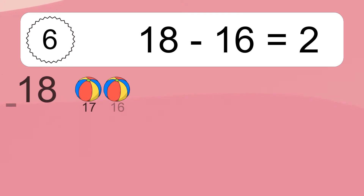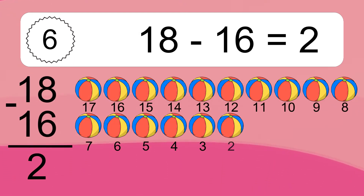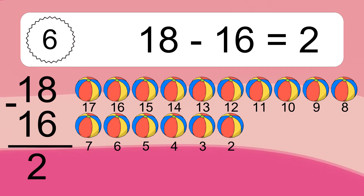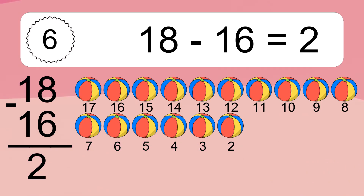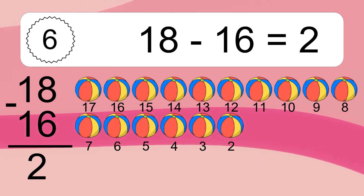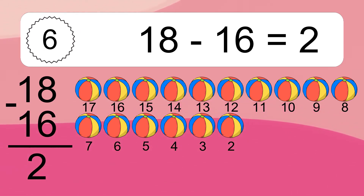18 minus 16 equals what? 18 minus 16 equals 2. Let's count it: 17, 16, 15, 14, 13, 12, 11, 10, 9, 8, 7, 6, 5, 4, 3, 2.